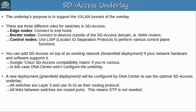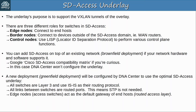Additionally, all links between switches are routed ports, so STP is not needed to avoid Layer 2 loops. And edge nodes — access switches — act as the default gateway of end hosts. This is known as a routed access layer. We've brought Layer 3 all the way down to the access switches that end hosts connect to.